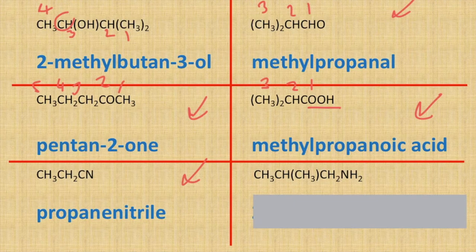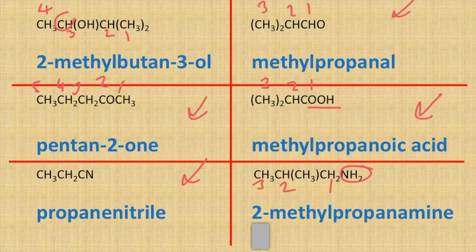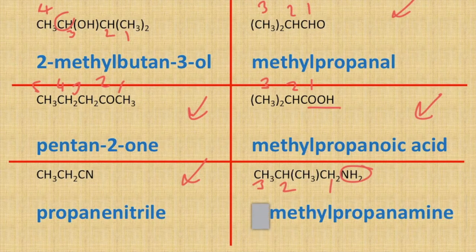Finally, this molecule is going to be an amine with the NH₂ group — carbon number one, two, and three — and coming off carbon number two is a methyl group. So this molecule is going to be 2-methylpropanamine, but again because that methyl has got to be on the second carbon we can just call it methylpropanamine.